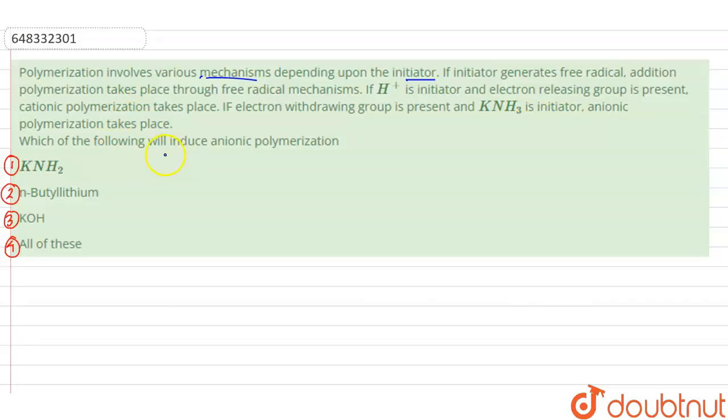Which of the following will induce anionic polymerization? The options are KNH2, N-butyl lithium, KOH, and fourth option is all of these.